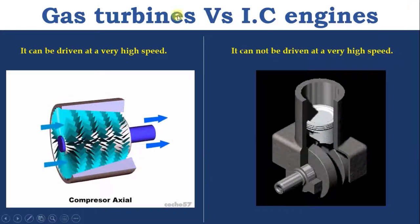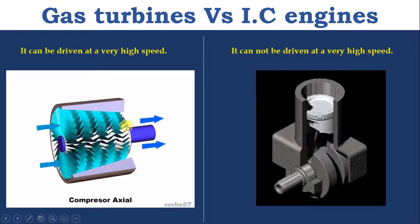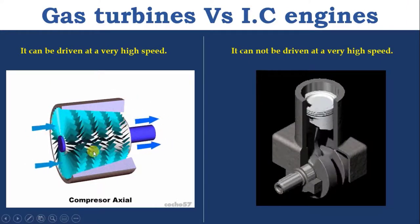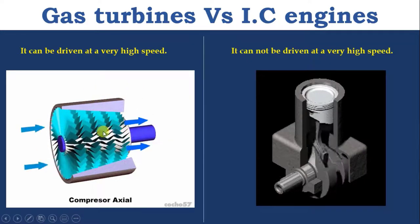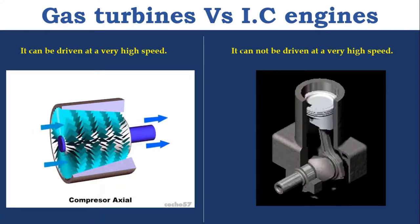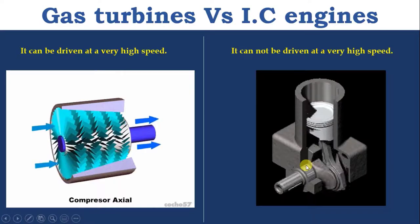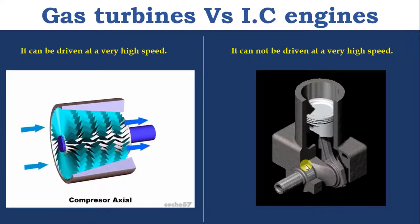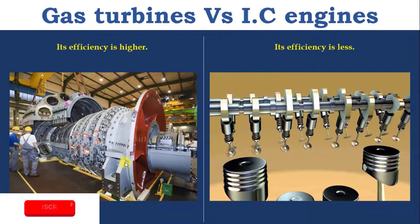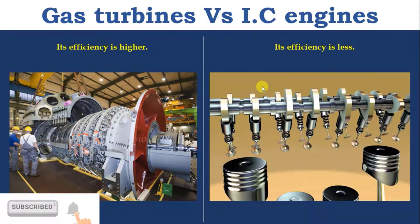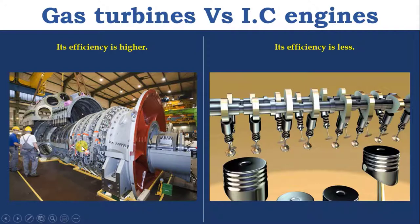Gas turbine can be driven at very high speed, about 30,000 to 40,000 RPM, whereas IC engine cannot be driven at very high speed due to balancing issues. Gas turbine efficiency is higher compared to the IC engine, due to lesser weight and fewer moving components in the gas turbine.